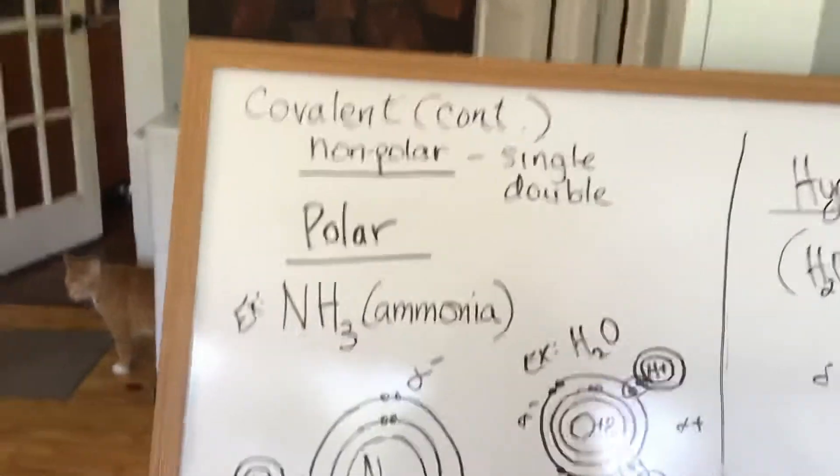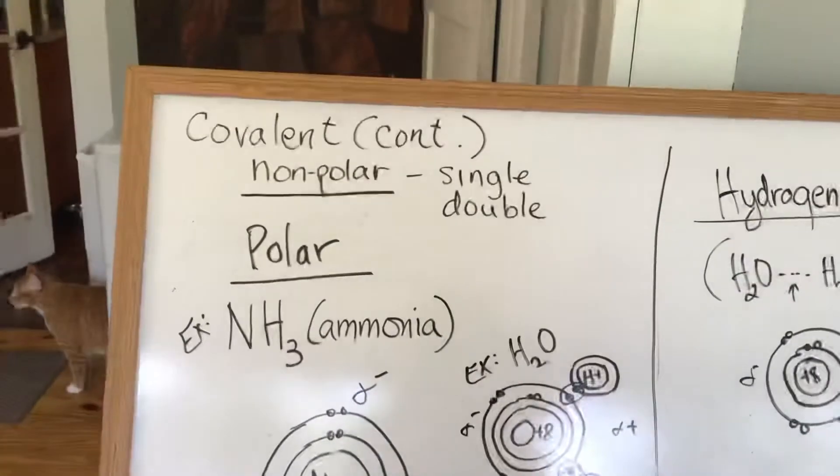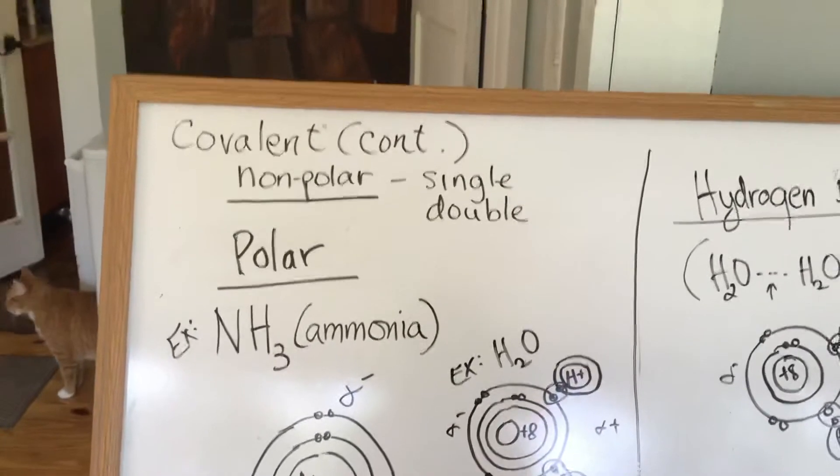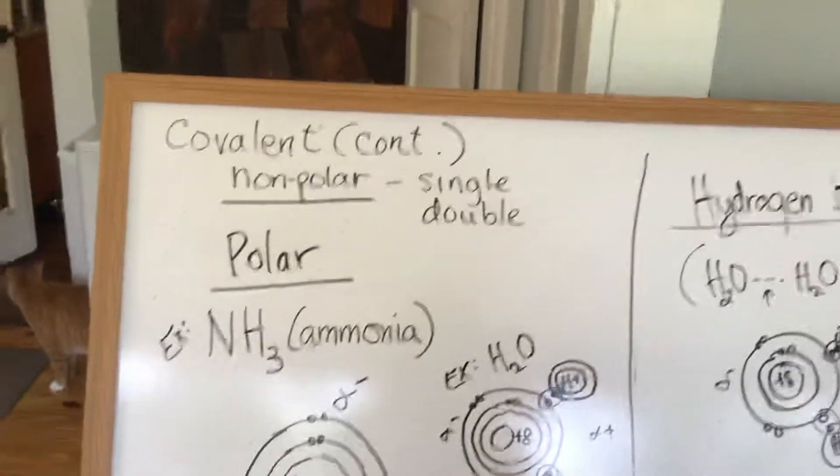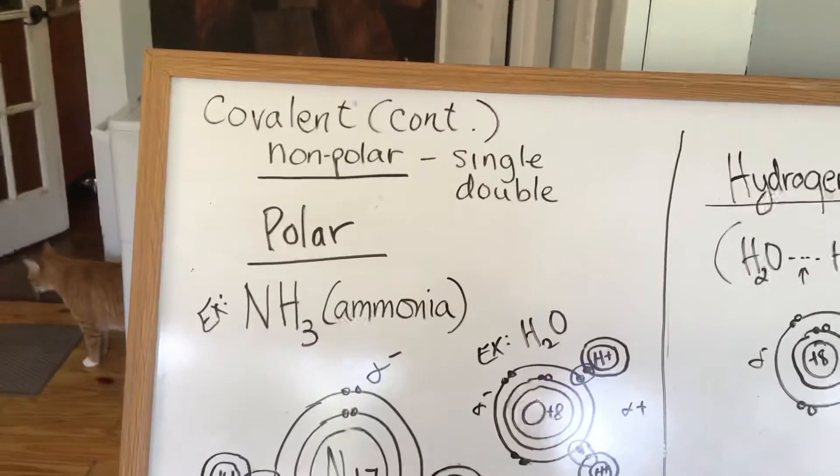Continuing on with covalent bonding, we were talking about non-polar covalent bonding, and we went over single and double. So we want to go over what a polar covalent bond is.